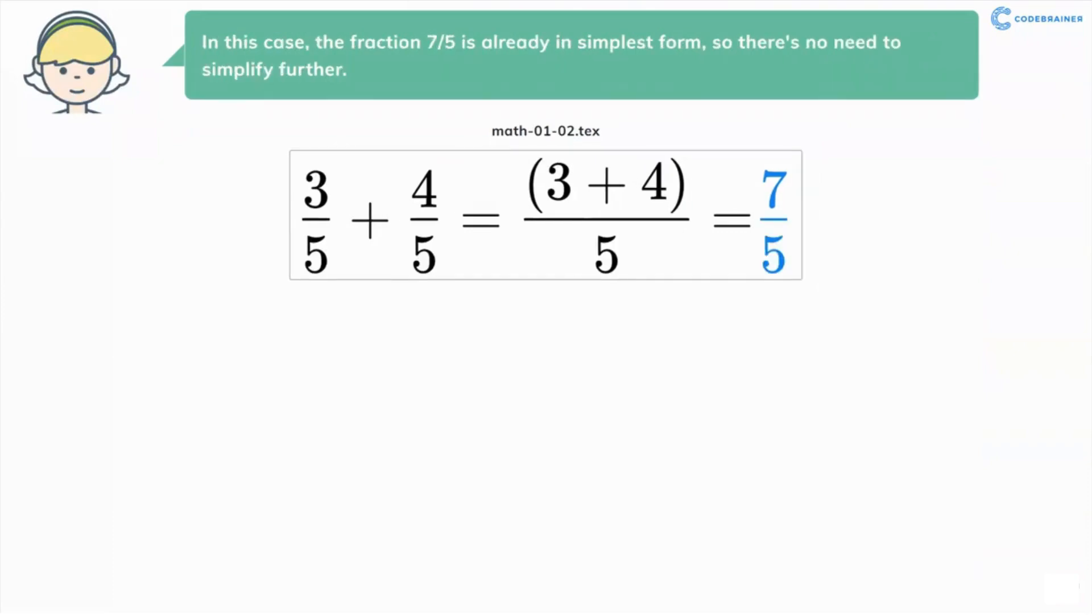In this case, the fraction 7/5 is already in simplest form, so there's no need to simplify further.